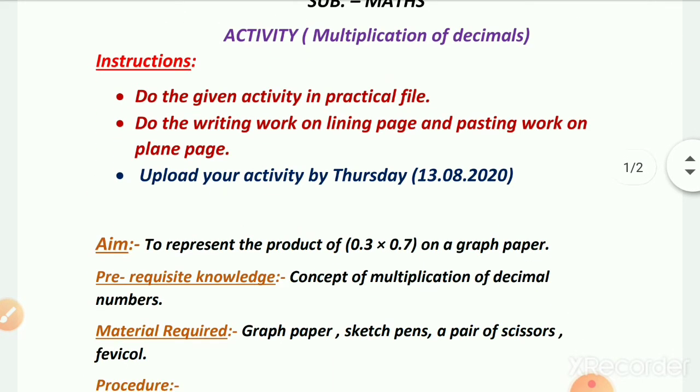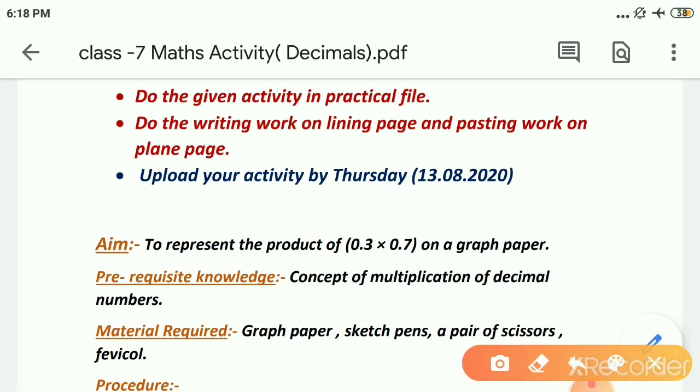Children as you all have known about that, this is the activity based on the topic multiplication of decimals. So here we will do multiplication of decimals. So what is the aim? Actually we are doing the multiplication on graph paper. And for this I have taken one example: 0.3 multiply by 0.7.